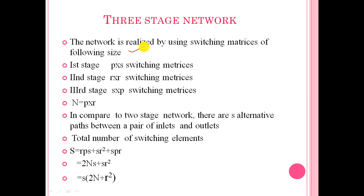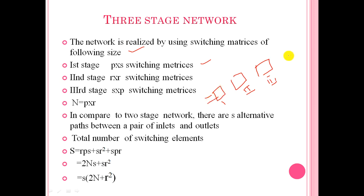In a three-stage network, the network is realized using switching matrices of the following sizes. In place of two stages, we use three stages of matrices. The first stage consists of p×s switching matrices. In the second stage we use r×r switching matrices.